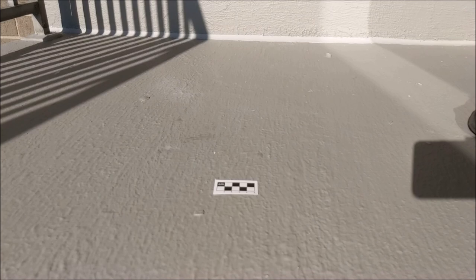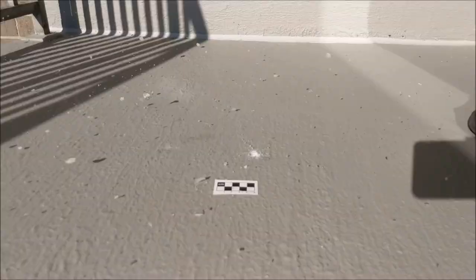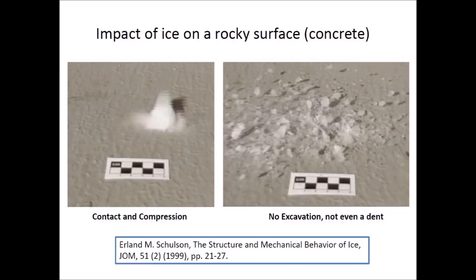This is the impact of an ice projectile fired from a slingshot toward the concrete floor. The contact and compression phase shows that the projectile disintegrates into many fast-moving ice shards; the impact does not even create a dent on the hard surface. Erlen Schulzson, a professor of engineering at Dartmouth College, explains that the brittle failure of ice under compression is marked by sudden material collapse after shortening less than about half a percent, with failure generally occurring as shear faulting on planes inclined at about 30 degrees to the direction of maximum principal stress.